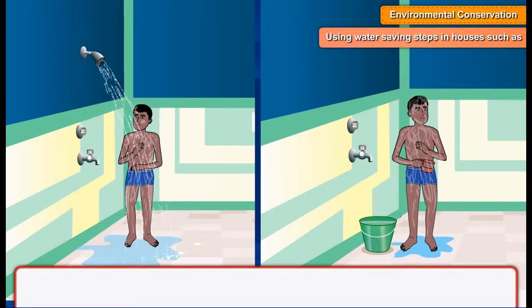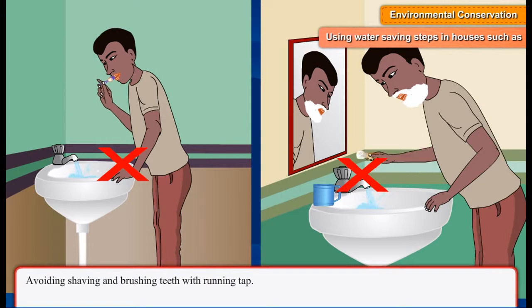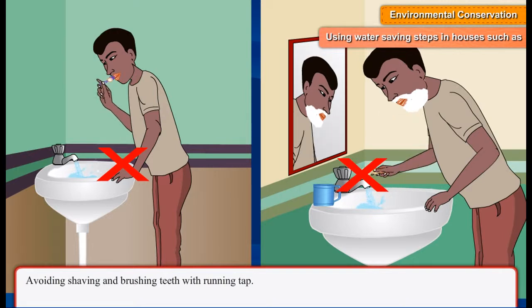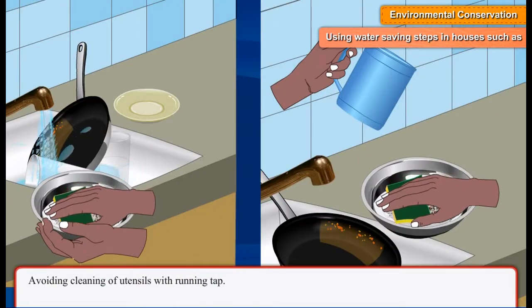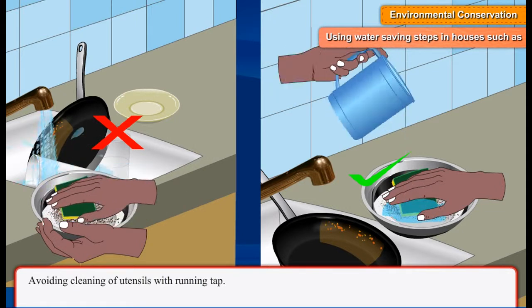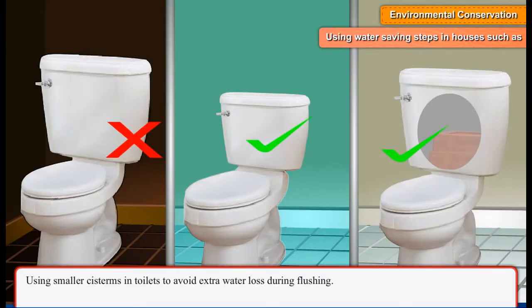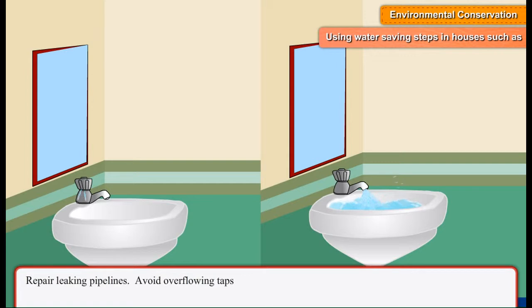Additional household steps: avoiding shaving and brushing teeth with a running tap, avoiding cleaning utensils with a running tap, using small cisterns in toilets to avoid extra water loss during flushing, and repairing leaking pipelines while avoiding overflowing taps.